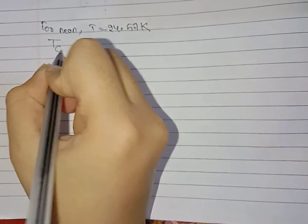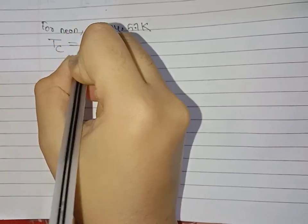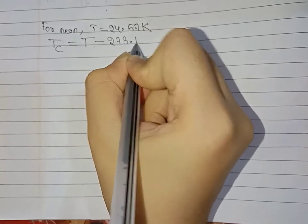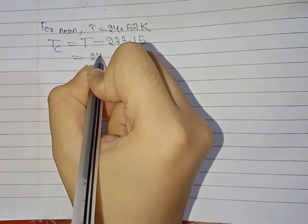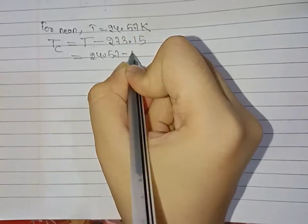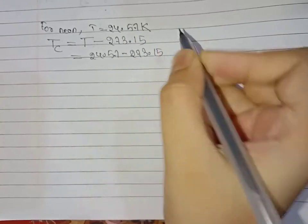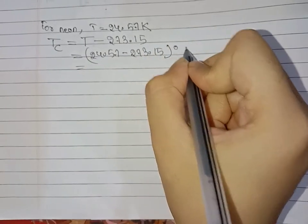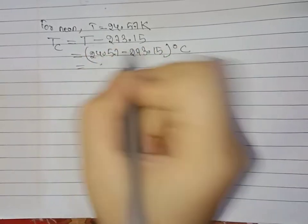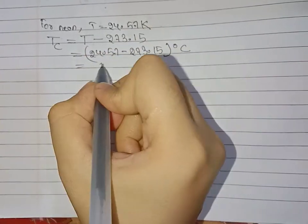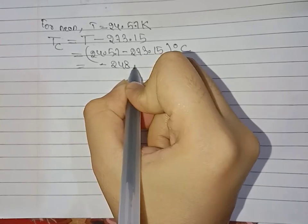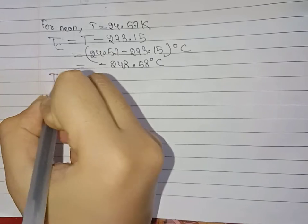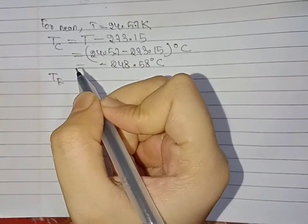The Celsius temperature formula is T_C = T - 273.15. So 24.57 minus 273.15 degrees C equals minus 248.58 degrees C. Now we'll convert this to Fahrenheit scale.